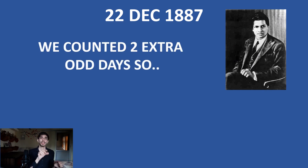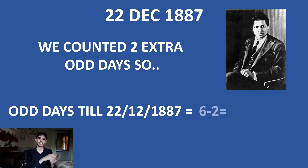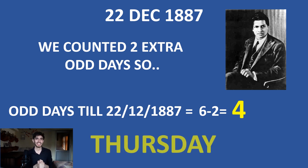From 31 December to 22 December we go back 9 days. Divide 9 by 7 — remainder 2, so 2 odd days. Subtract 2 from 6: 6 minus 2 equals 4. That means on the birthday of Srinivasa Ramanujan, it was a Thursday.